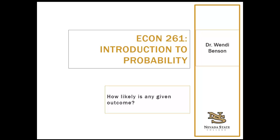Another example: maybe a credit card executive wants to examine the probability that a customer with a poor credit score will be late with their next payment. In that case, if the probability is high — there's a high percent chance that someone with a poor credit score will be late with their next payment — then you may avoid giving credit cards to those with poor credit.